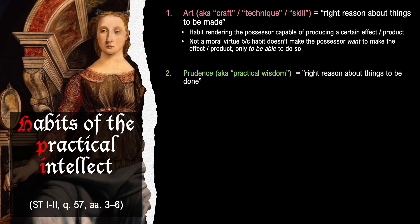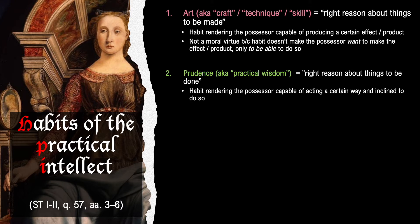Prudence, on the other hand, is both an intellectual virtue and a moral virtue. The difference between non-moral virtues and moral virtues is whether or not the virtue makes the possessor want to do the thing towards which the virtue inclines. Art does not make you want to do the thing towards which the art inclines you — a painter might be capable of painting beautiful paintings but choose to make an ugly one. Prudence is a habit rendering the possessor both capable of acting a certain way and inclined to do so. Therefore, prudence, unlike art, is a moral virtue.